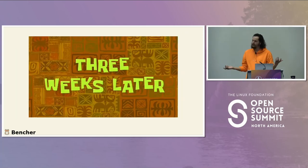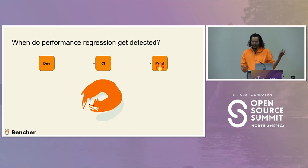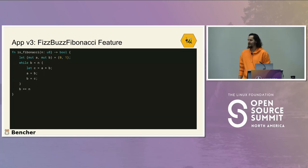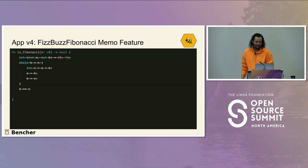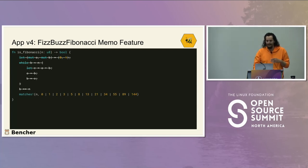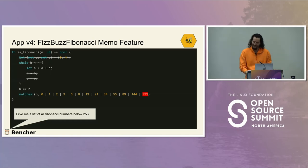Our app works fine until about three weeks later when production's on fire. We chase our tail all day trying to figure out what's going on. We trace everything and eventually realize: we're calculating the Fibonacci sequence every single time we get a packet. This isn't so good. Also, I asked ChatGPT for a list of all Fibonacci numbers below 256 — and it was missing 233. So our robot overlords have not quite taken over yet.